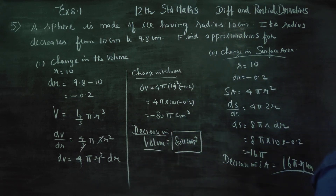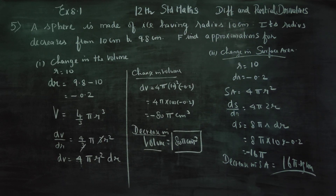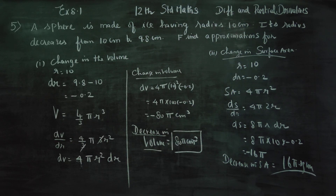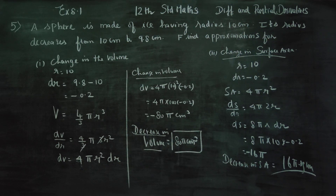The decrease in surface area of the spherical ice is 16π square centimeter, and the decrease in volume is 80π centimeter cube. These are the changes due to the decrease in radius. Thank you.